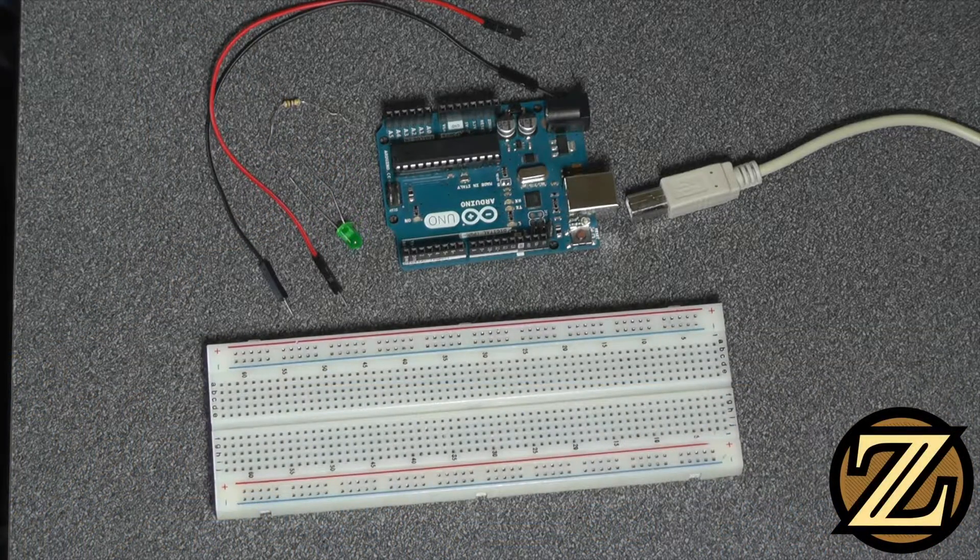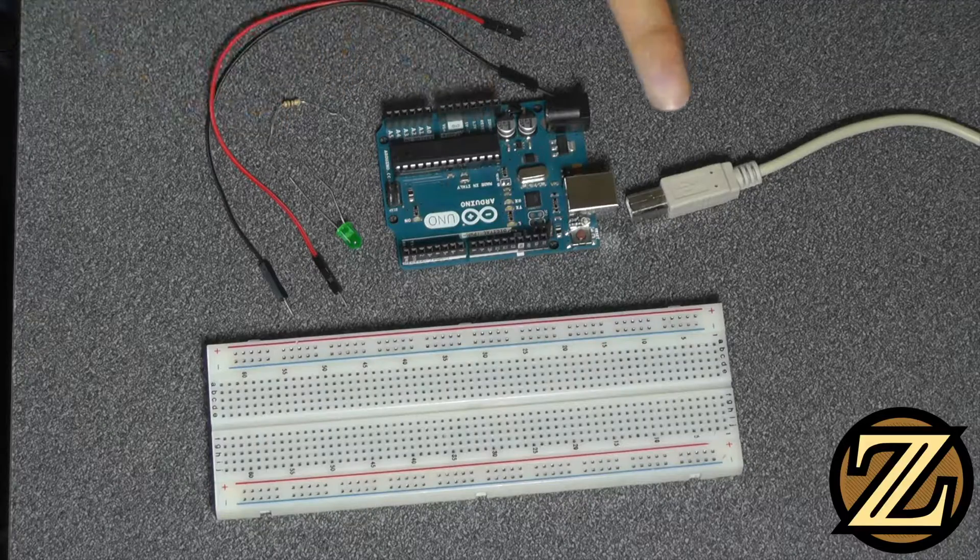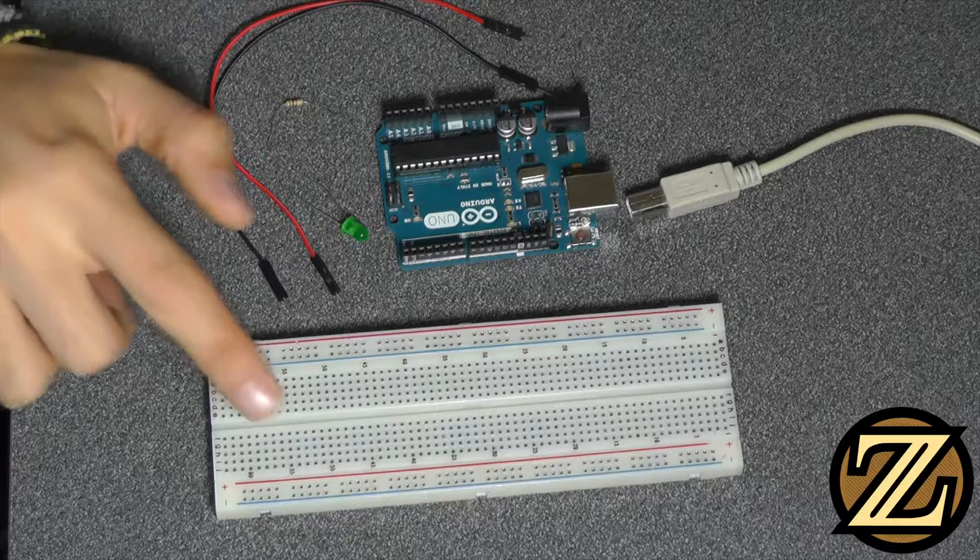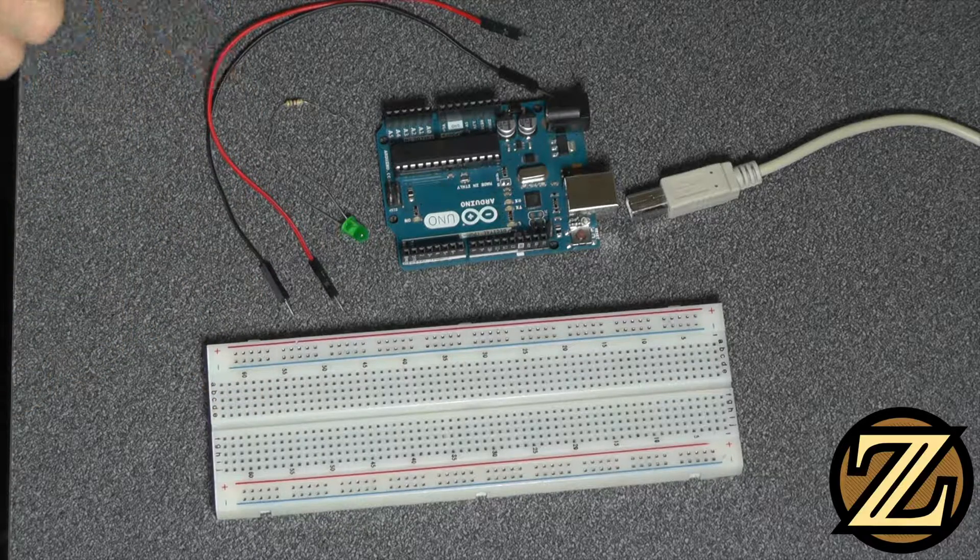What you're going to need to complete this tutorial is an Arduino Uno, a cable to connect it to your computer, a LED, a resistor, a breadboard, and a couple of wires to bring it all together.